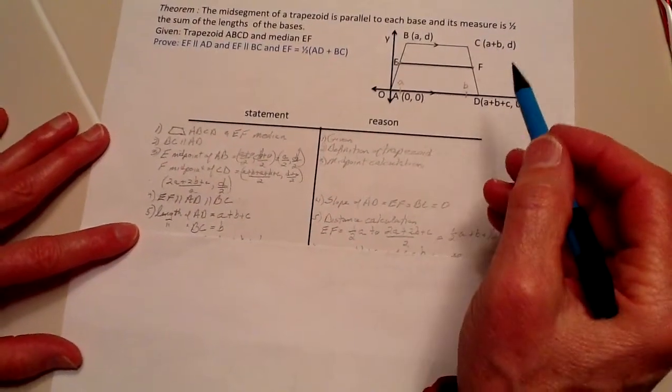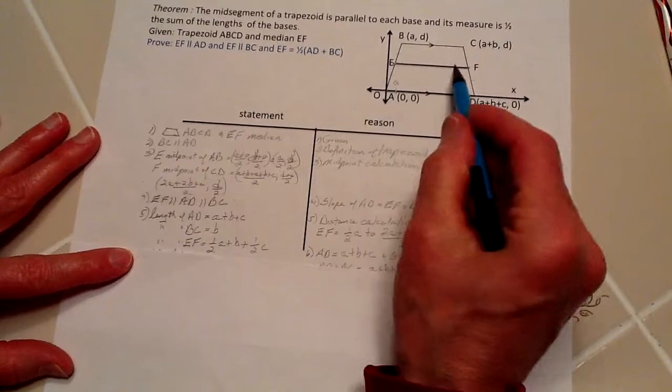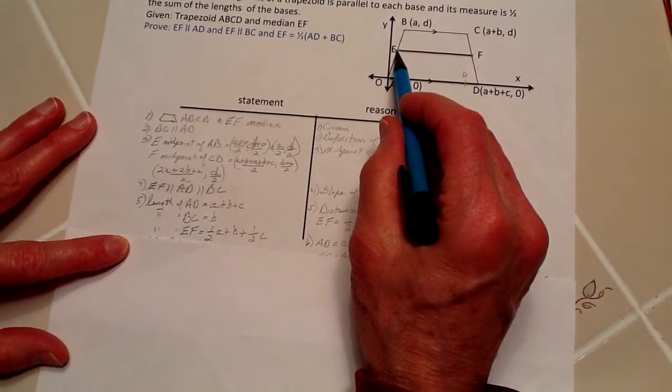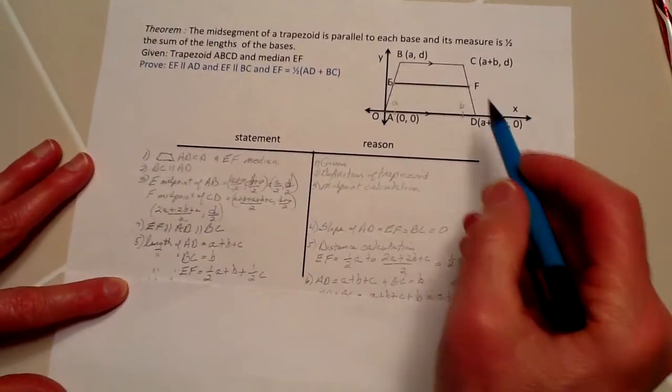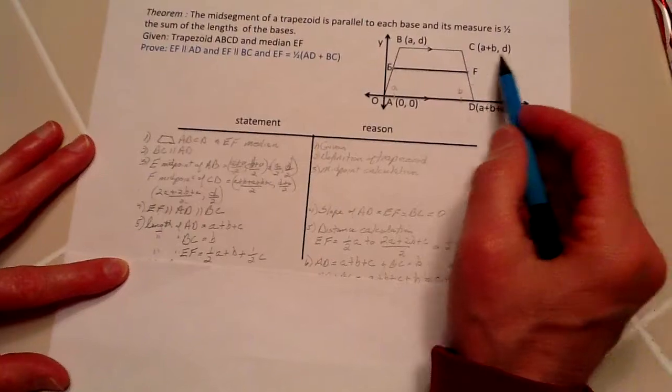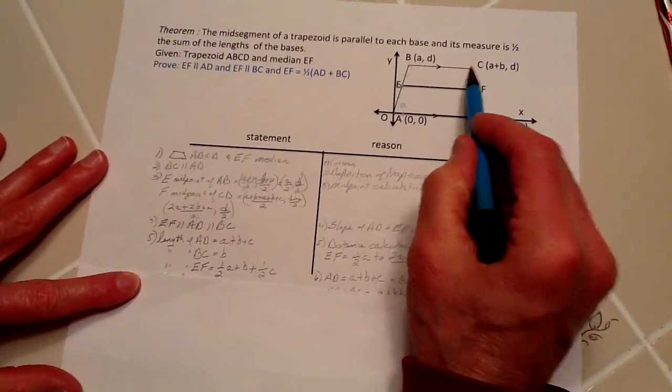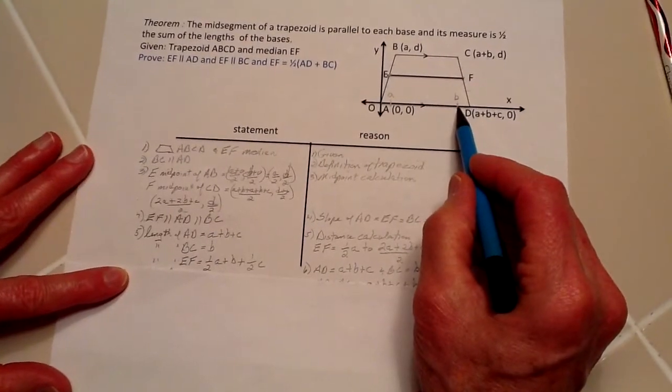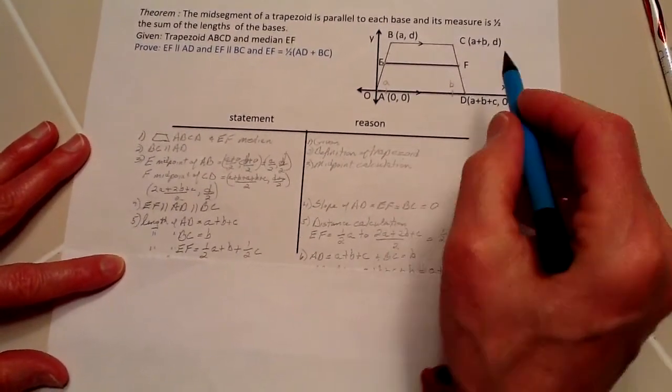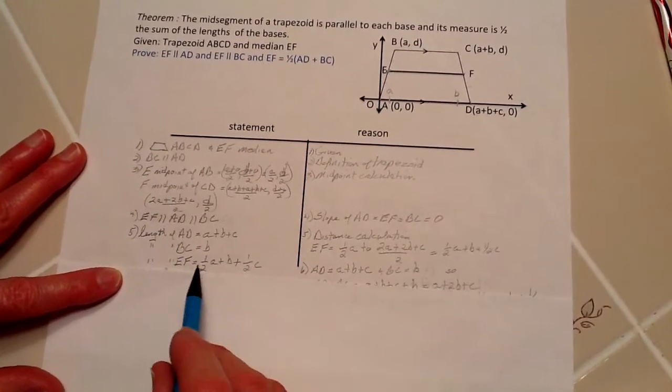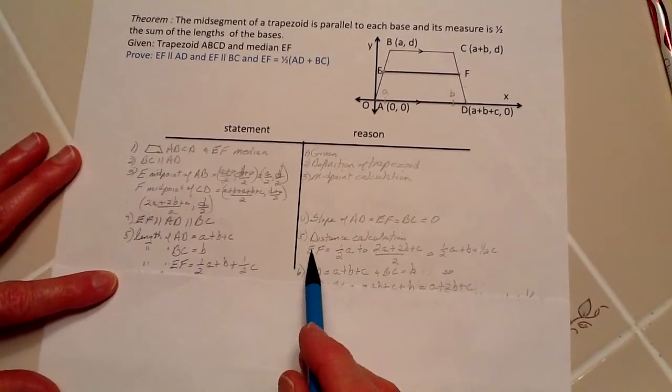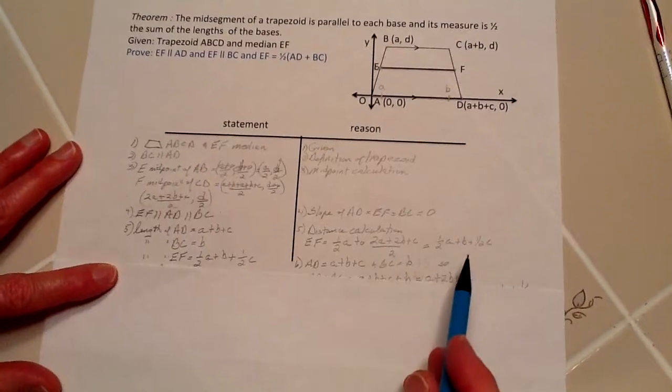From the distance formula, we have for the length of EF: we start at one-half A or A over 2, and then we add B, which is the distance from here to here, and C, which is from B to here. So this distance is A, this distance is B, and this distance is C. That's why I have one-half A plus B plus one-half C using the distance calculation.